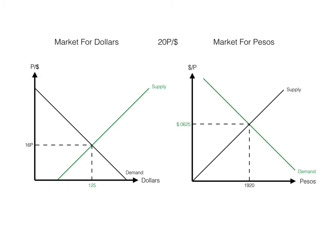That's 1,920 pesos. Looking at this intuitively, an increase in the supply of dollars in the foreign currency market — in order to buy Mexican assets — is similarly an increase in the demand for pesos in order to buy those assets. It's 6.25 cents per peso, there are $125 being transacted in this market, and that's 2,000 pesos being transacted.